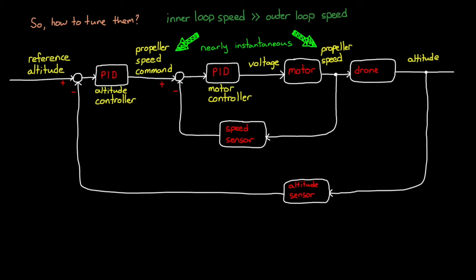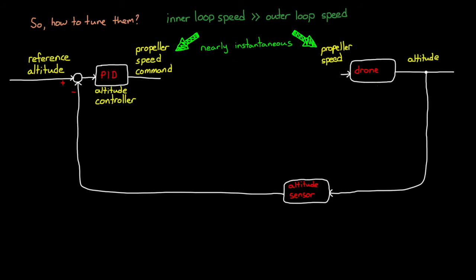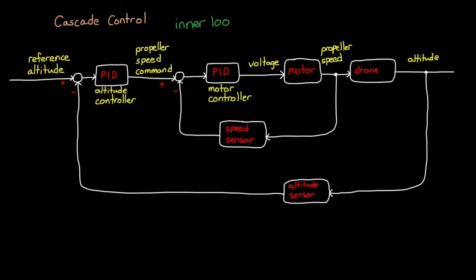Therefore, to tune the outer loop, you can make the assumption that the inner loop doesn't exist, and that the command just goes straight through. In this way, you're essentially tuning two single loops exactly like you're used to. If the two loops must operate at about the same bandwidth, then tuning becomes a little more difficult because we can't claim that the inner loop is fast enough to be instantaneous. Now, the inner loop performance does affect the outer loop. I'm going to highlight three different ways to approach tuning here, but I'm not going to go into detail on any of them. If you'd like more information, check out the links below.